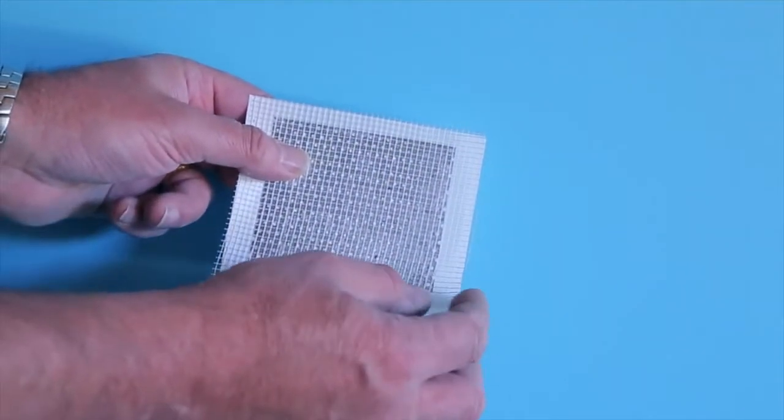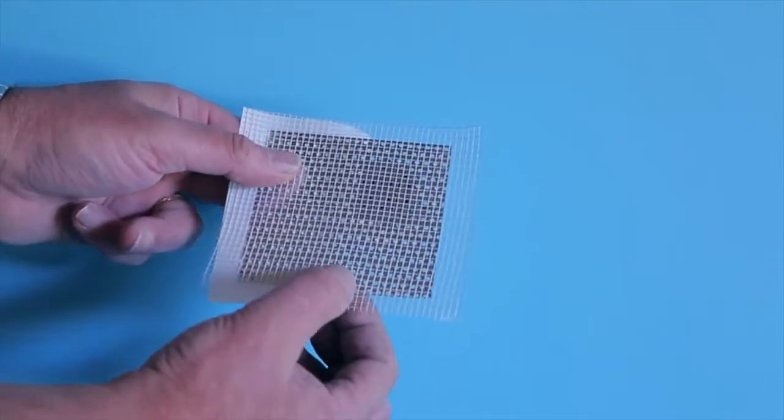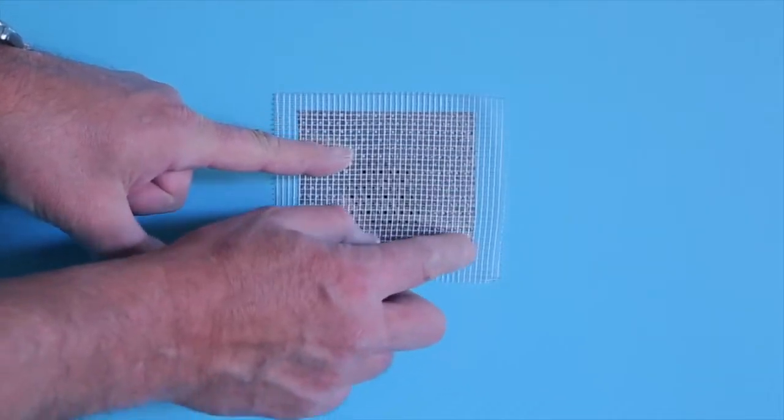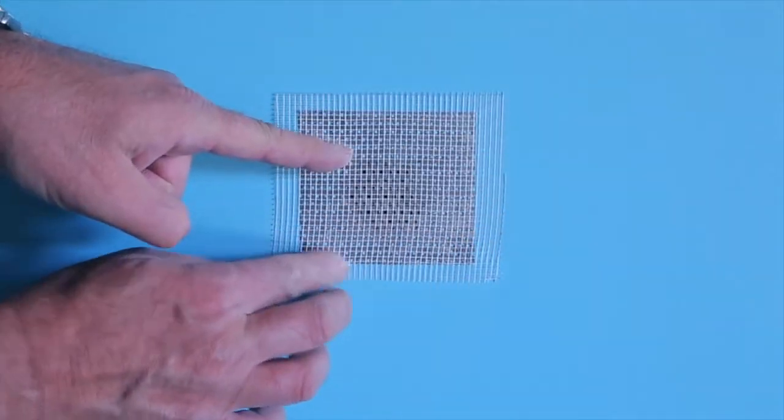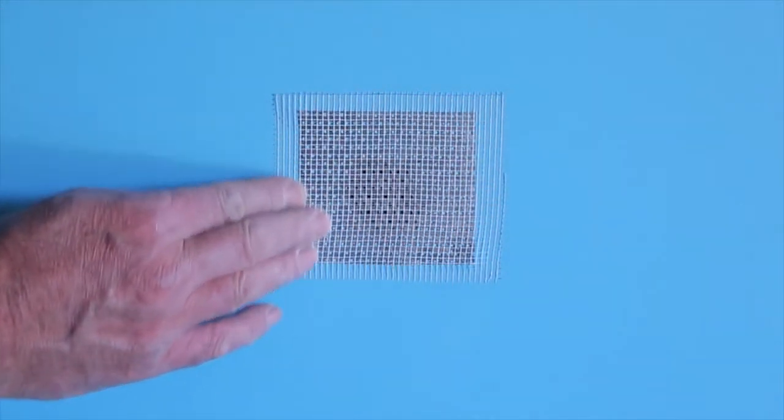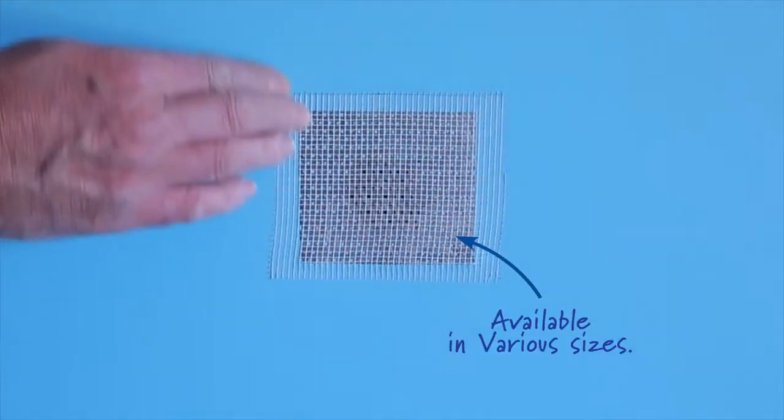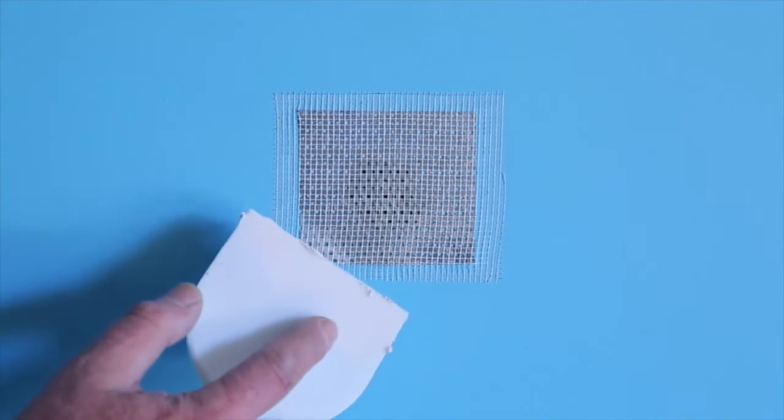Cover the hole by using a plasterboard repair patch. Remove the backing and apply to the plasterboard surface. This creates a bridge allowing the patching compound to be applied. The patch comes in different sizes.